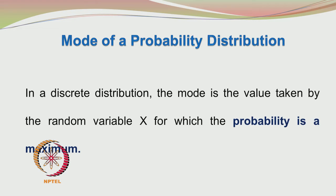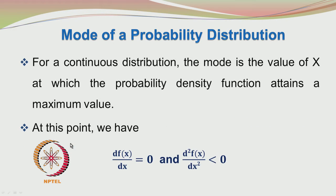The mode of a probability distribution: in the case of a discrete distribution, the mode is the value taken by the random variable x for which the probability is a maximum. In the case of a continuous probability density function, the mode is the value taken by x at which the probability density function attains a maximum. By the definition of the maximum point, df(x)/dx = 0 and the second derivative d²f(x)/dx² < 0.